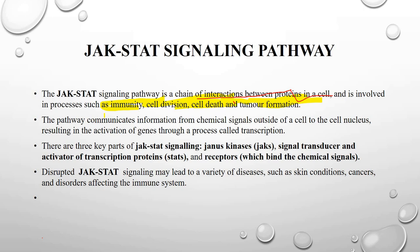The key words are JAK-STAT signaling, where JAK means Janus kinase, STAT means signal transducer and activator of transcription protein, and the receptor is the chemical binding site. Disrupted JAK-STAT signaling may lead to a variety of diseases, such as cancers and disorders of the immune system. So basically, it is a signaling pathway which includes the chain of interactions between protein molecules mediated through immunity and cell functioning.